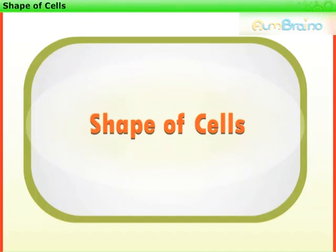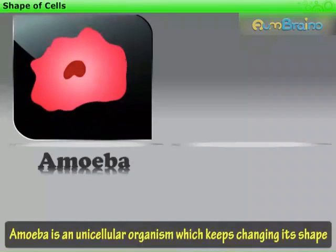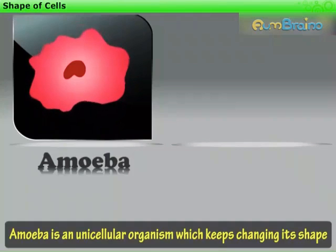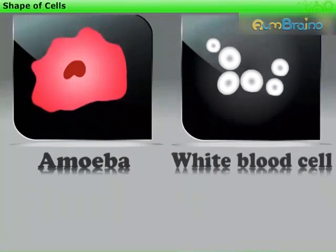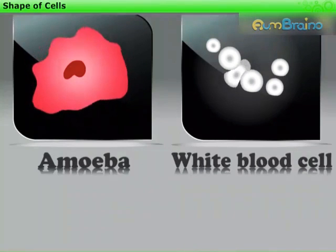Shape of cells. We know that an amoeba, which is a unicellular organism, keeps changing its shape. Similarly, a white blood cell, that is WBC, in human blood also changes its shape.